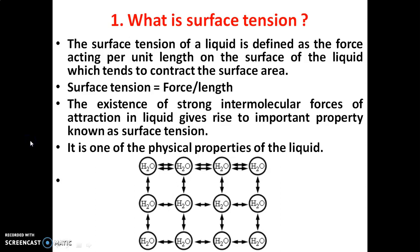First question: what is surface tension? The surface tension of a liquid is defined as the force acting per unit length on the surface of the liquid, which tends to contract the surface area. That is, surface tension equals force divided by length. The existence of strong intermolecular force of attraction in a liquid gives rise to this important property known as surface tension. It is one of the physical properties of the liquid.